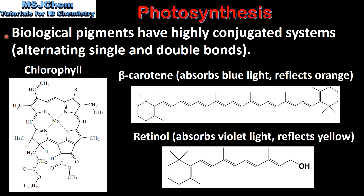Biological pigments have highly conjugated systems. A conjugated system consists of alternating single and double bonds. Here we have three examples of pigment molecules: chlorophyll, beta carotene, and retinol. If we look at the structure of chlorophyll we can see it has alternating single and double bonds. Beta carotene and retinol also have alternating single and double bonds. It's these conjugated systems that are responsible for the absorption of visible light, giving pigments their characteristic colours.